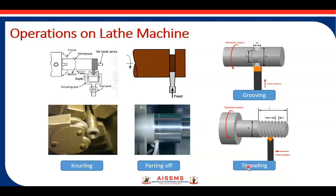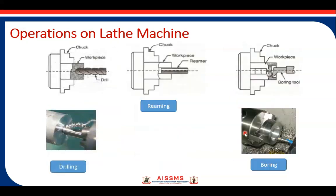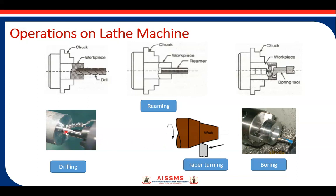The next operation is threading. A threading tool is used for producing threads on the workpiece, with feed along the length of the workpiece towards the left-hand side. Next is drilling — you can create a circular hole along the axis of the workpiece. The drill is mounted onto the tailstock, and feed is given along the axis of the workpiece to create the hole inside it.